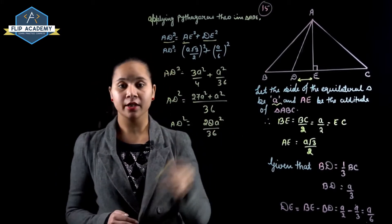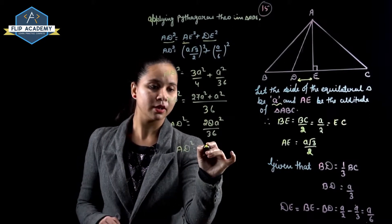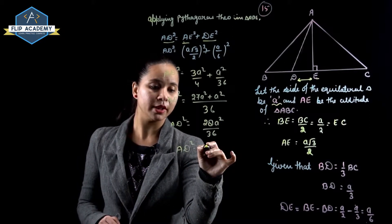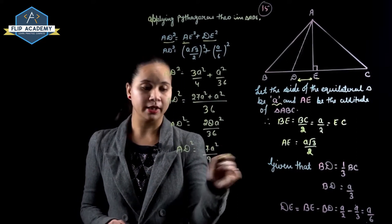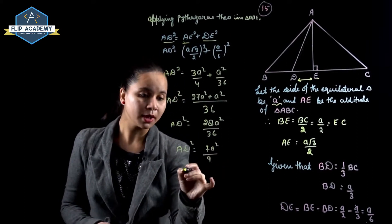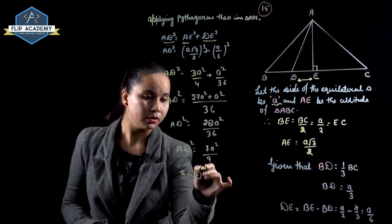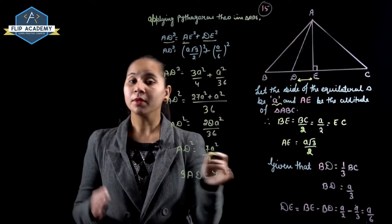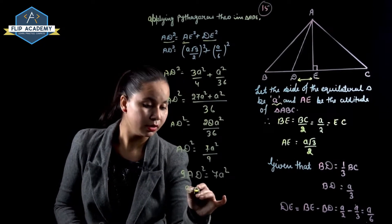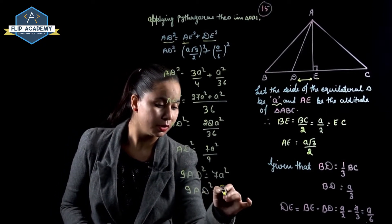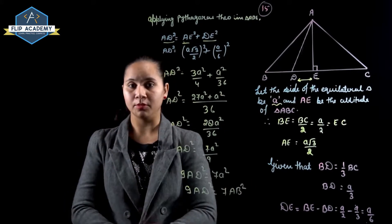Simplifying 28/36, we get AD² equal to 7A²/9. Cross-multiplying gives 9AD² equal to 7A², and since the side is AB, we write 9AD² equal to 7AB². Hence proved.